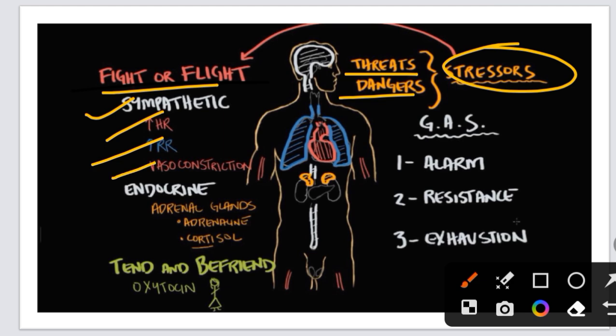Vasoconstriction will increase. Additionally, the adrenal gland — present just above the kidney — will secrete adrenaline and cortisol hormones in response.